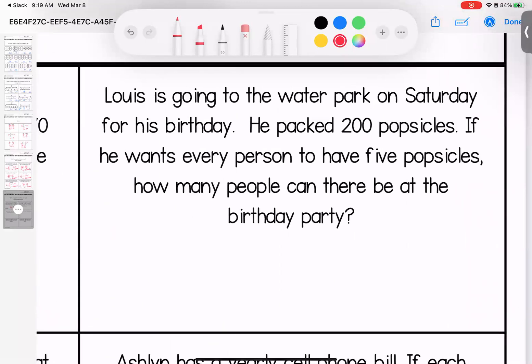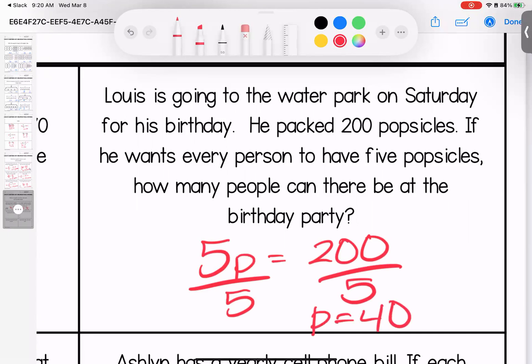Lewis is going to the water park on Saturday for his birthday. He packed 200 popsicles. If he wants each person to have five popsicles, how many people can there be at his party? So five popsicles to every person. He has 200 to share. Divide by five, each person gets 40 popsicles. They better be small.